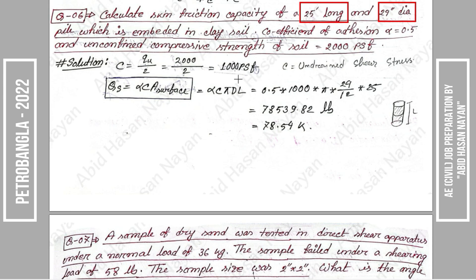The skin friction Qs is equal to alpha × Ca × surface area of the pile. The surface area equals pi × diameter × length of pile. With alpha = 0.5, Ca = qu/2 = 1000 PSF/2 = 500 PSF. Then Qs = alpha × Ca × surface area, giving values of approximately 24,000 to 48,000 pounds.